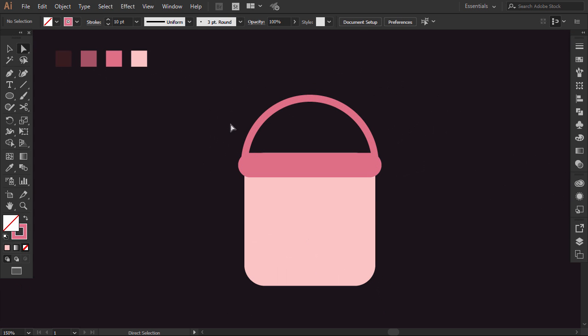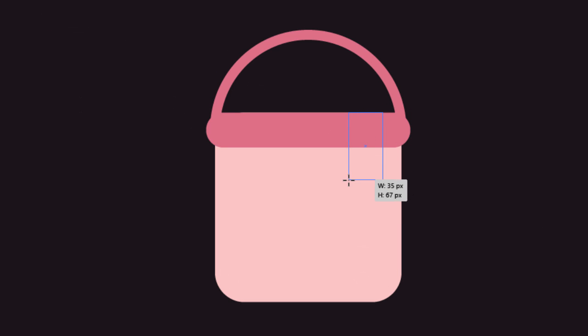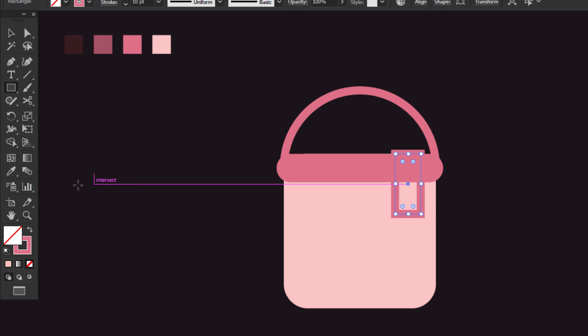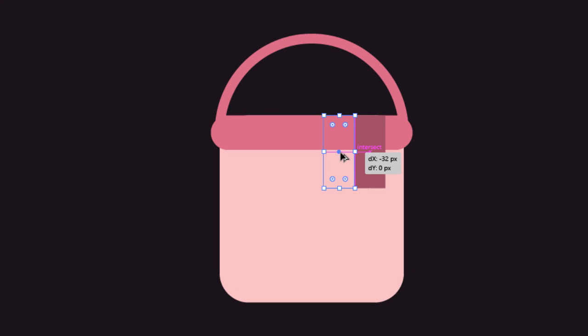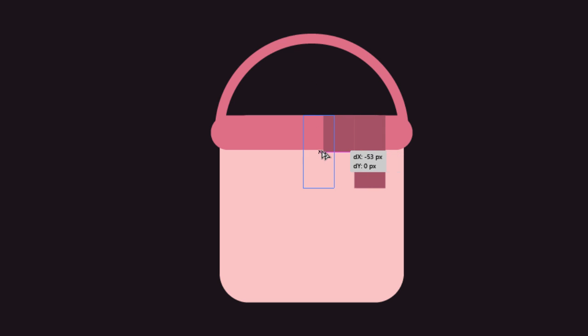Now I will make a flat paint drop dropping from the bucket. With the rectangle tool, make a vertical one here and give it the next darker color. Then hold Alt and drag it left, make it aligned with the first one, then make it shorter. Again, hold Alt and drag the first rectangle, make it aligned with the second one, then make it a little bit longer.